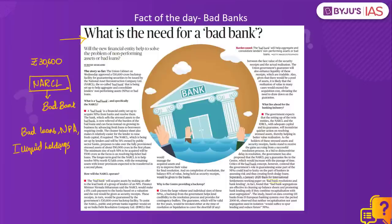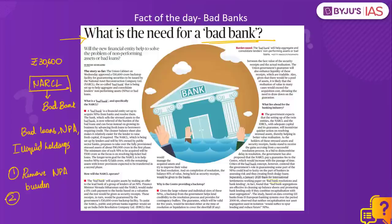What a bad bank then does is resolve these bad assets or loans over a period of time by selling them in the market. Bad loans are loans that have been borrowed from a bank but have not been repaid or are unlikely to be repaid. These bad banks help lenders in two ways: first, they take off the NPA burden from the banks, allowing the banks to look more positively at new loans and business growth. Second, when a bank's balance sheet is cleaner — with fewer or no non-performing assets — it becomes relatively easier for the lender to raise fresh capital if required.